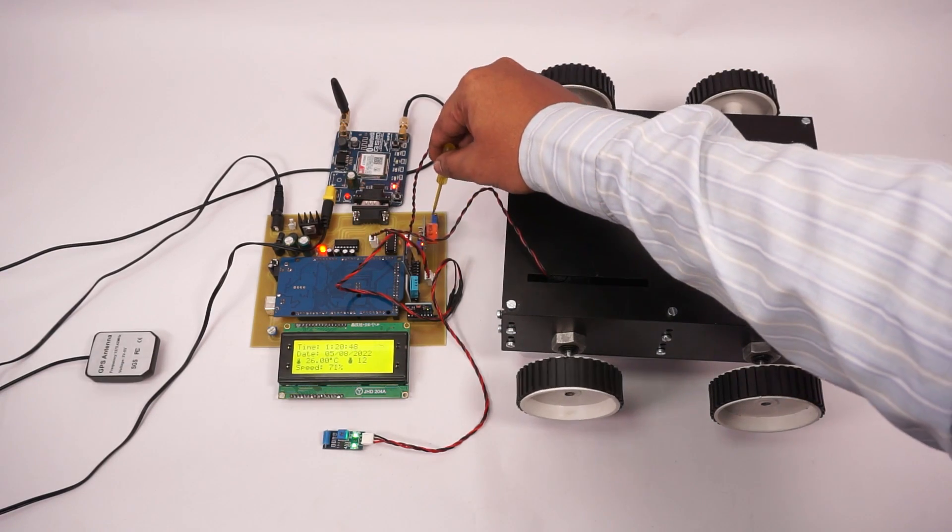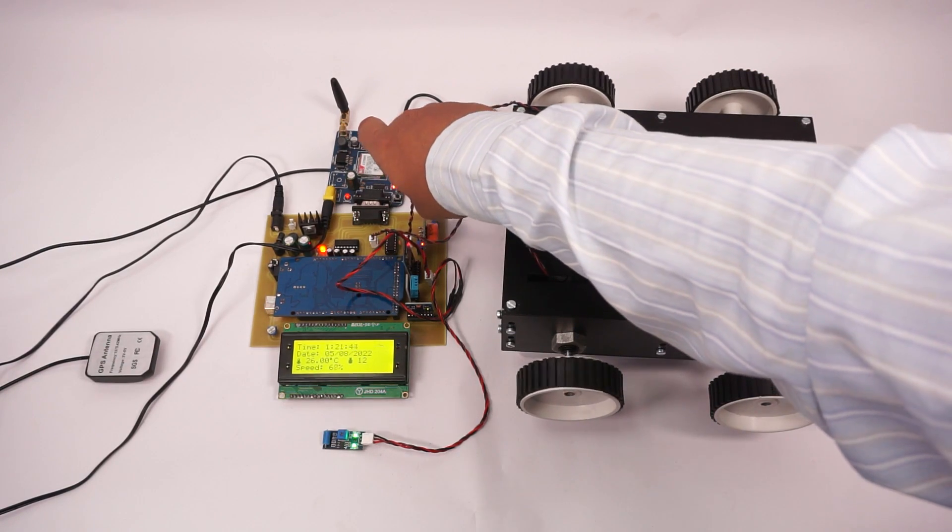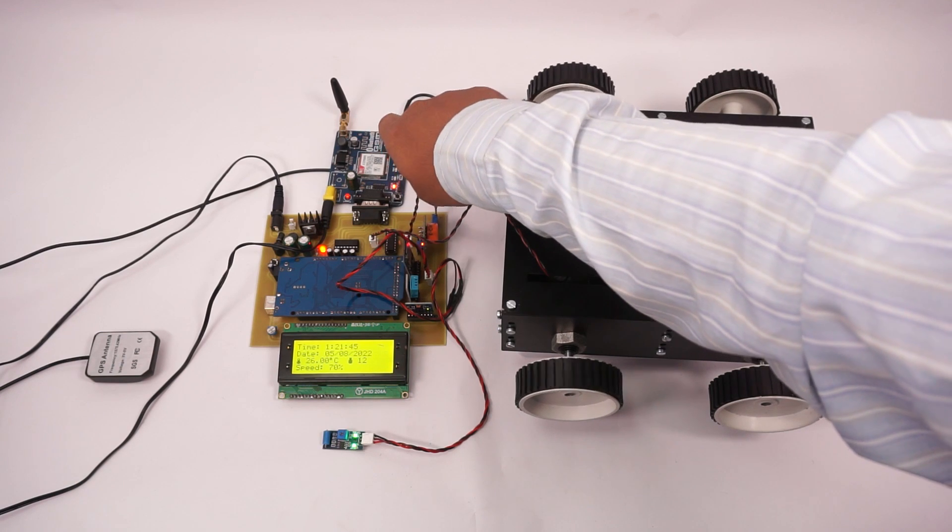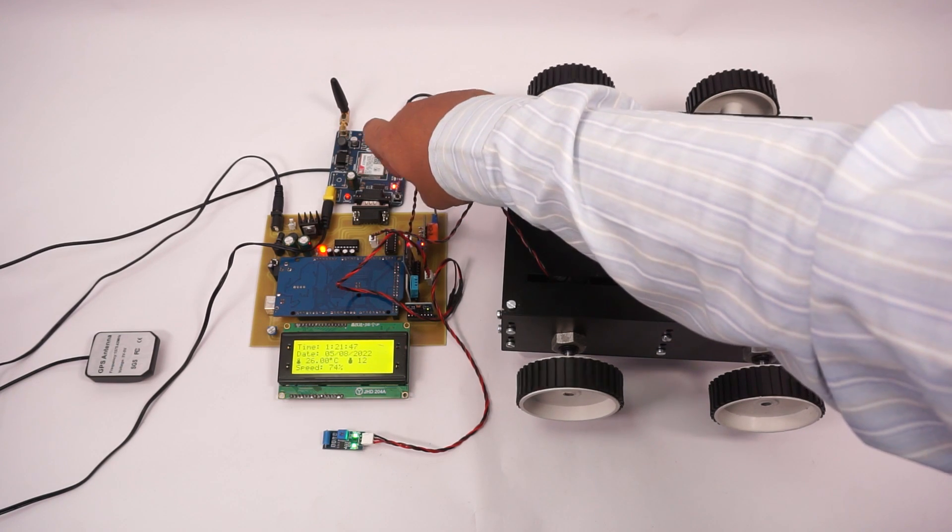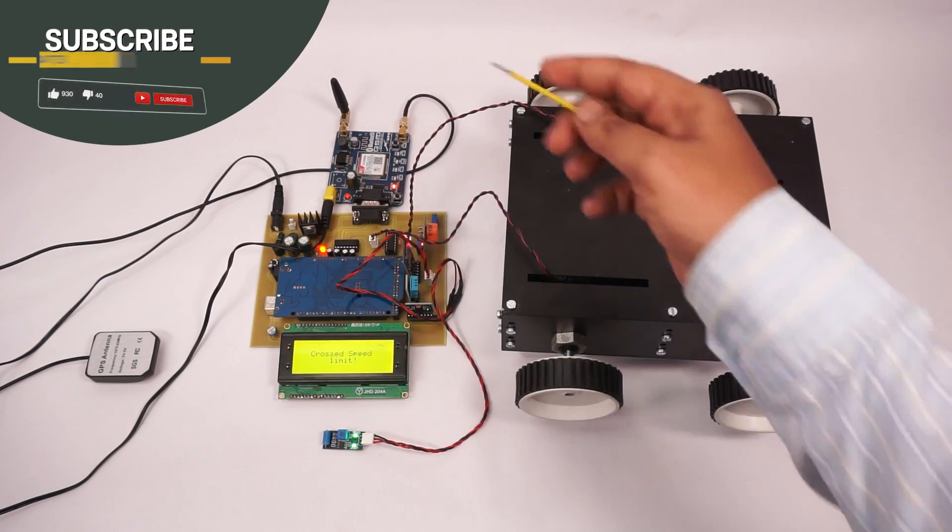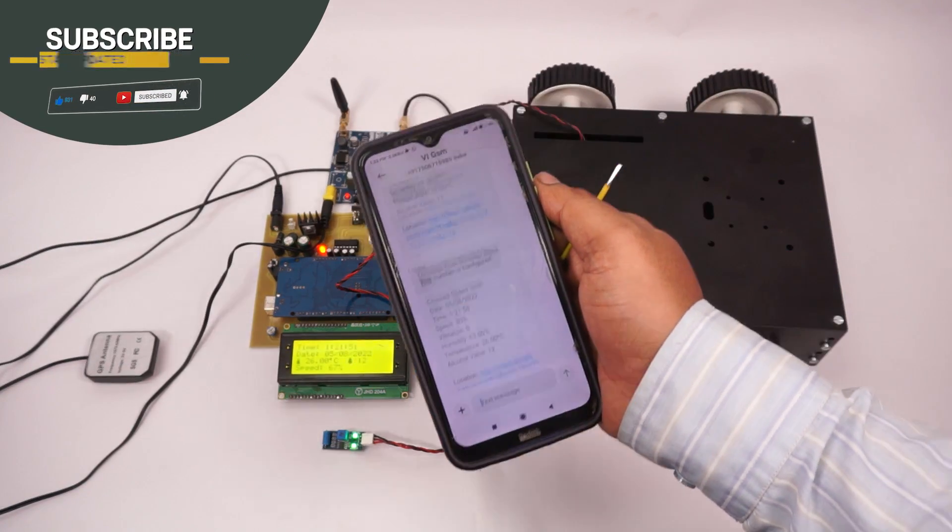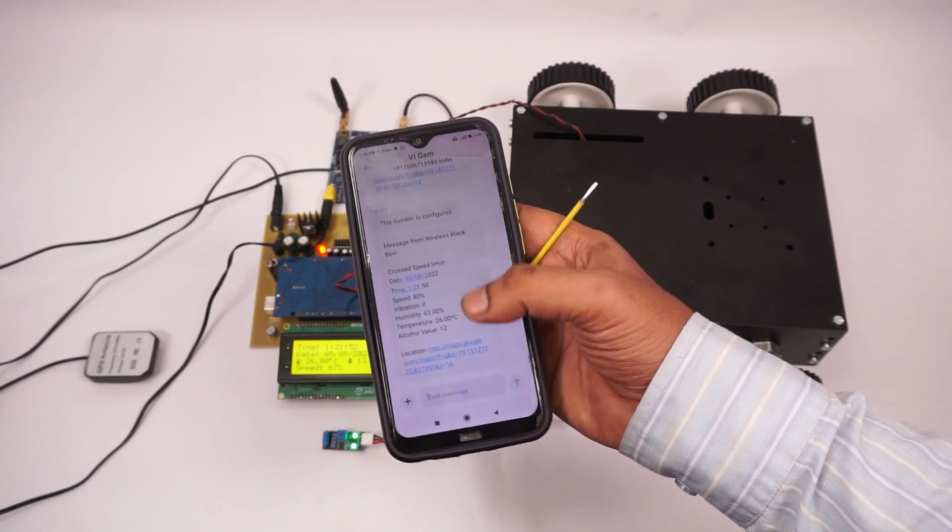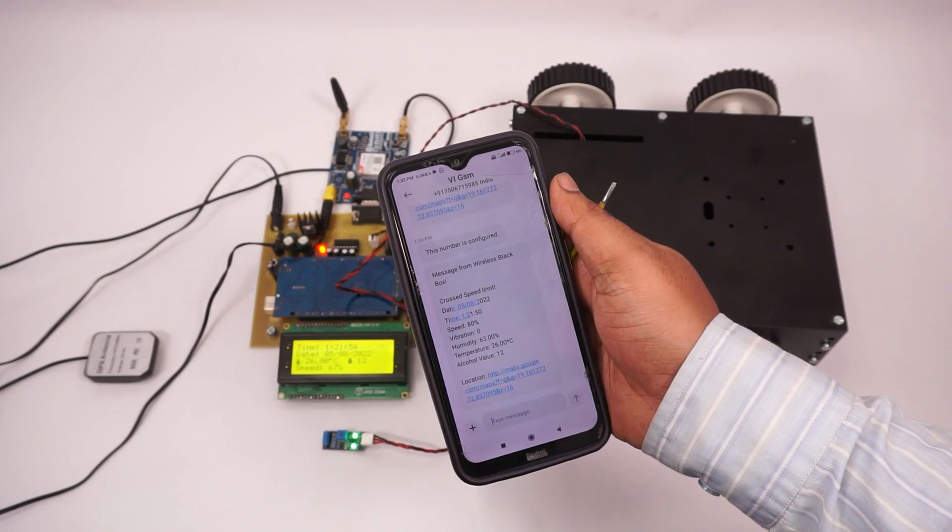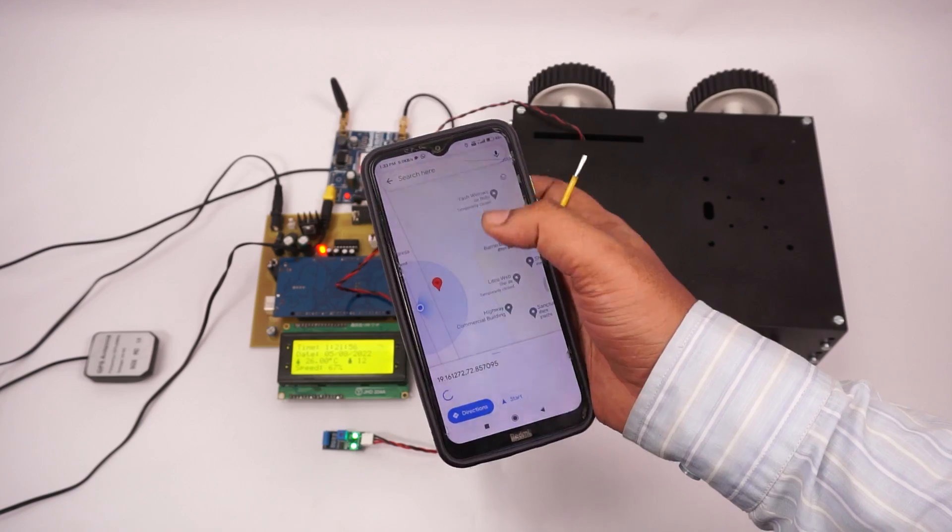Now we will adjust the motor speed using a trim pot to simulate high speed of the car. So as you can see, it is saying that the speed limit has been crossed. And we also got an SMS with GPS location of the vehicle where it crossed the speed limit.